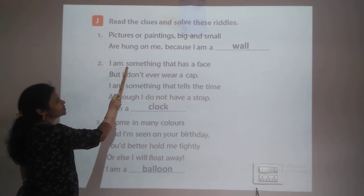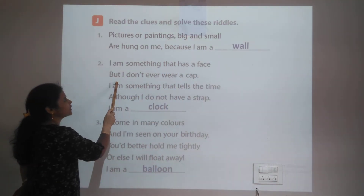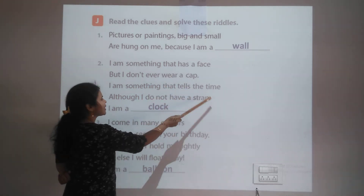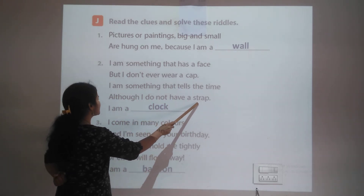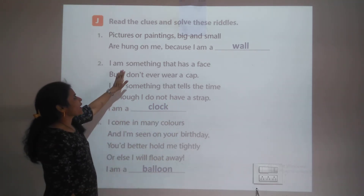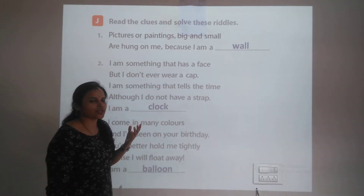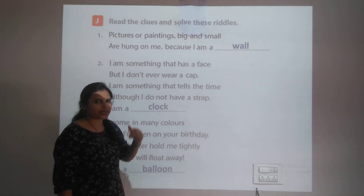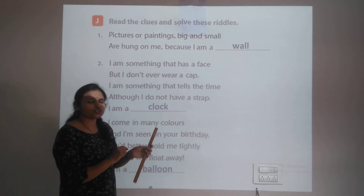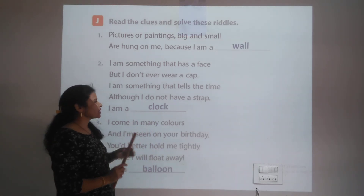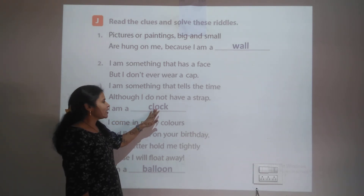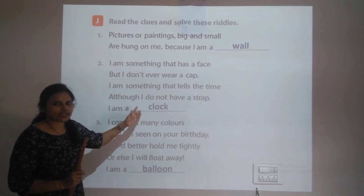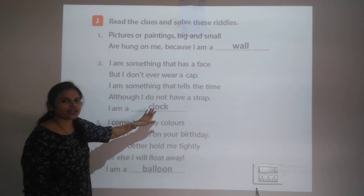Second riddle: I am something that has a face, but I don't ever wear a cap. I am something that tells the time, although I do not have a strap. This object has a face, tells the time, but has no strap like a watch does. The answer is a clock.